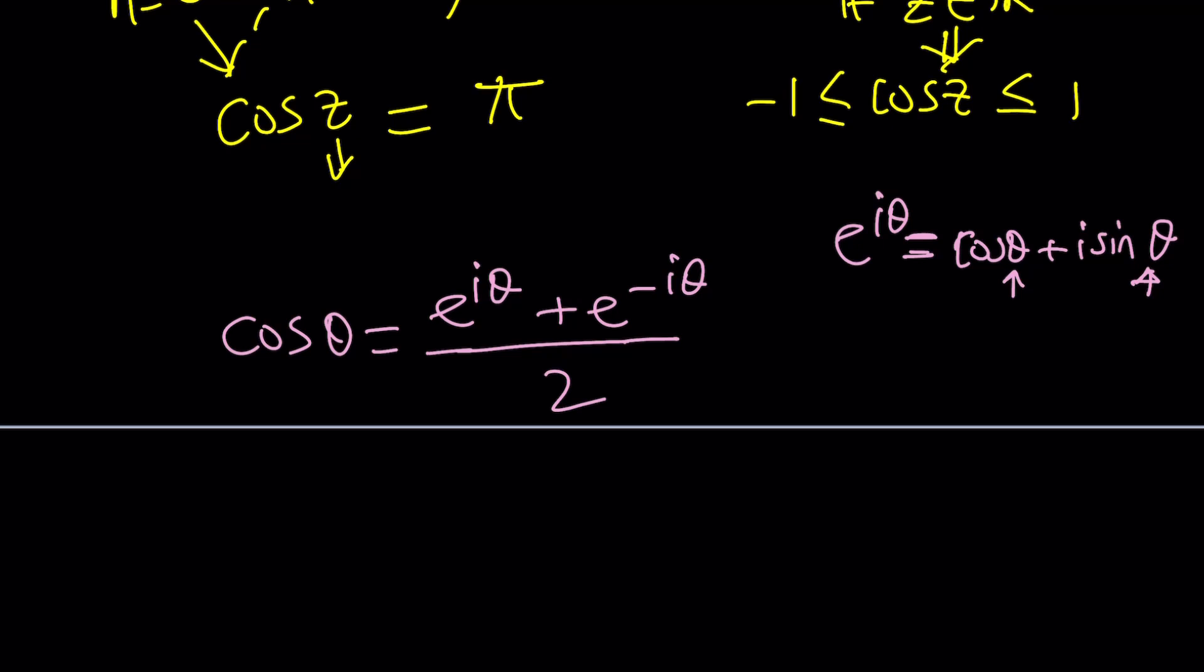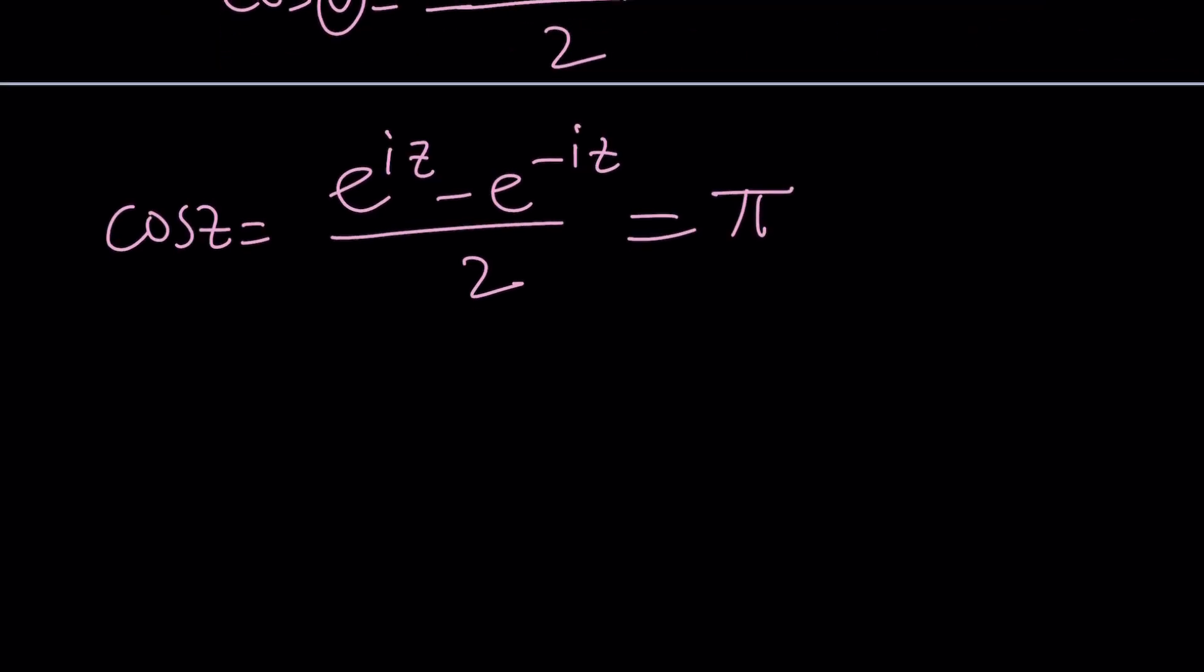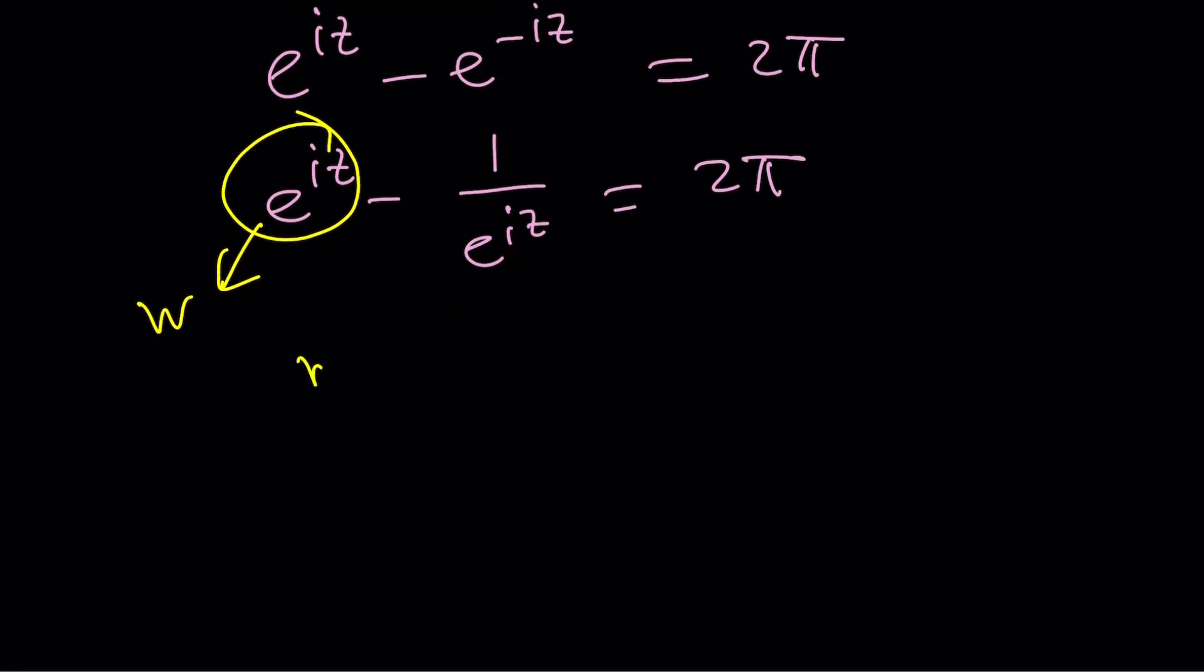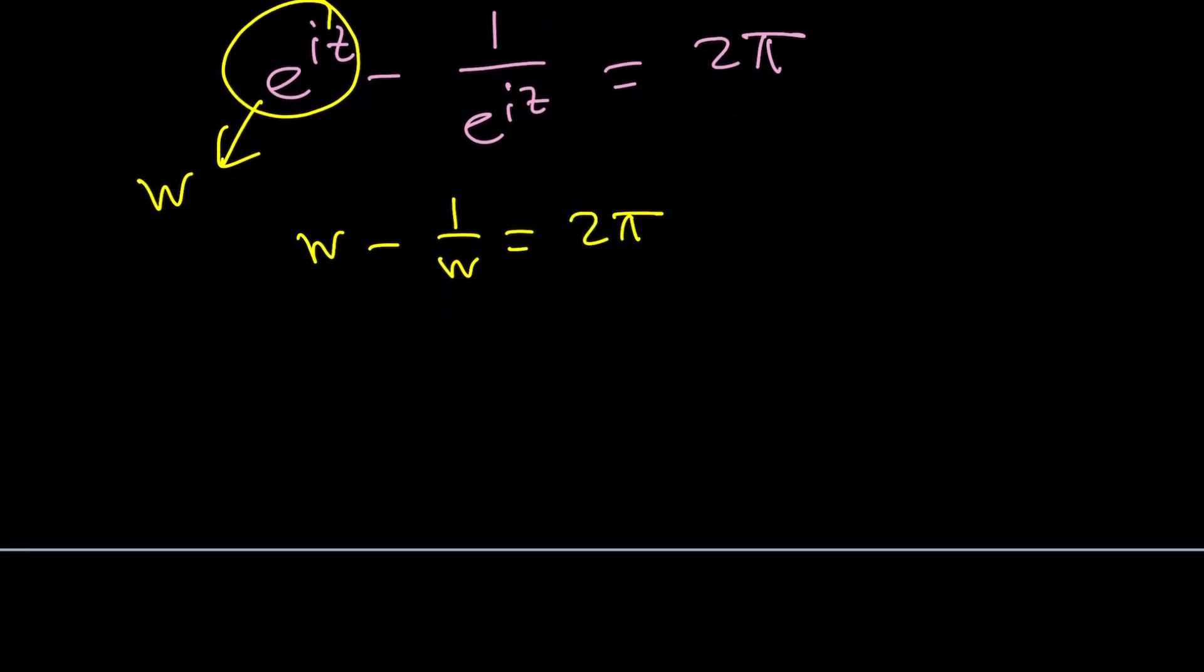Now, what am I going to do with this? Replace theta with z. So cosine z is going to equal e to the i z minus e to the negative i z divided by 2, set it equal to pi. Let's solve this equation. I want to multiply both sides by 2, get 2 pi, and then use the reciprocal or the negative exponent rule. Now is the time for substitution. Call this w. And we're going to get w minus 1 over w equals 2 pi. From here, we can multiply everything by w.